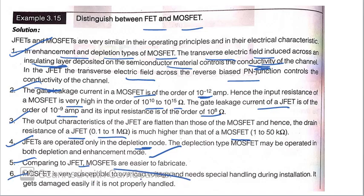Fifth one is, JFETs are operated only in the depletion mode. The depletion type MOSFET may be operated in both depletion as well as in enhancement mode. Fifth, comparing to JFET, MOSFETs are easier to fabricate. Sixth, MOSFET is susceptible to overload voltage and needs spatial handling during installation. It gets damaged easily if it is not properly handled. Well, I have already told you they are very sensitive to electrostatic charge. If the pins of the MOSFET are touched by hand, they can also destroy.